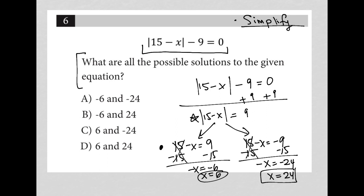That's my second solution. Now I look at the question, what are the possible solutions to the given equation? Well, I've already done that through simplification. I'm looking for positive 6 and positive 24. And that is choice D.